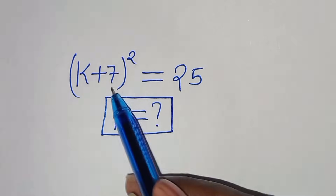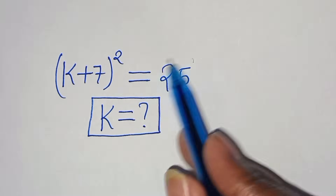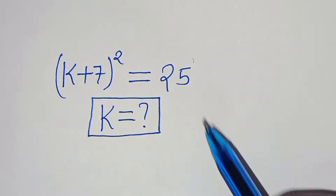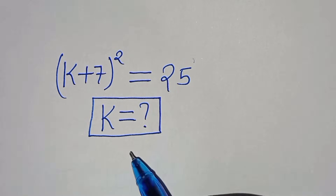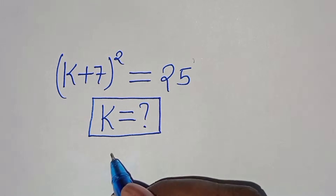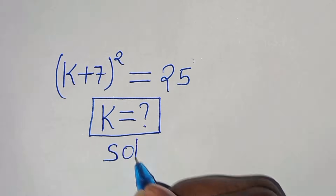We have k plus 7 to the power of 2, this is equal to 25. So what is the value of k? Now let's provide a solution.